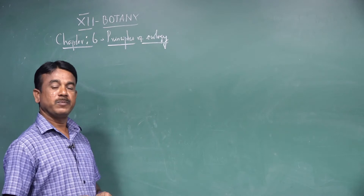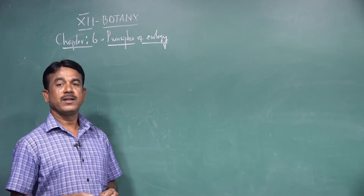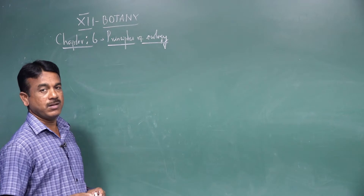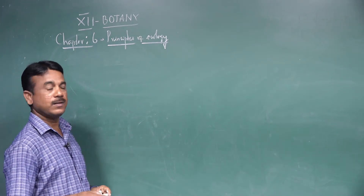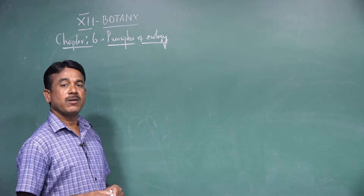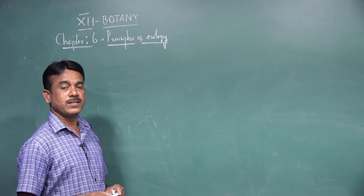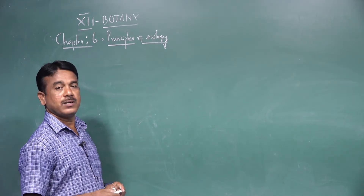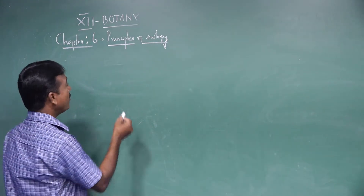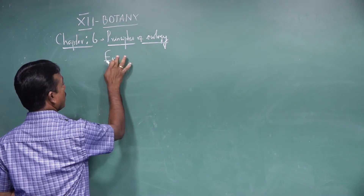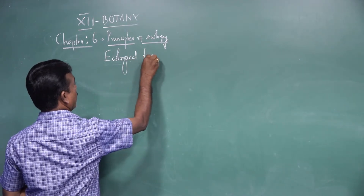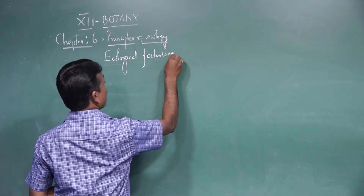Good morning students. Today we are going to discuss the fourth chapter, commonly called as principles of ecology, from chapter six. In the early classes we learned that ecology is the study of surroundings. In this chapter, we are going to classify what are called ecological factors, also known as environmental factors.